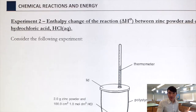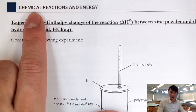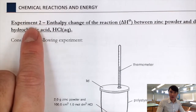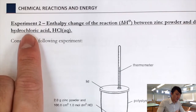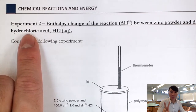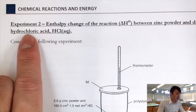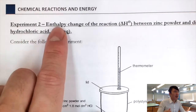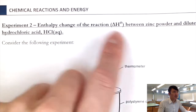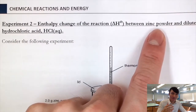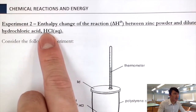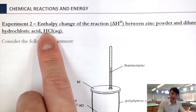In this video I'm going to continue on the topic of chemical reactions and energy. From our previous video I discussed the calorimetric experiment of determining the enthalpy change of neutralization. For today's video we are going to further discuss two very classic experiments, starting with the enthalpy change of reaction between zinc powder and dilute hydrochloric acid — an example of a redox reaction, which is typically exothermic.